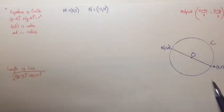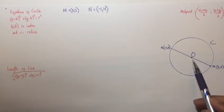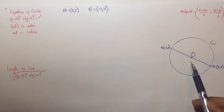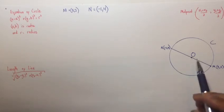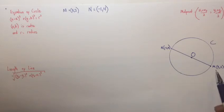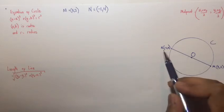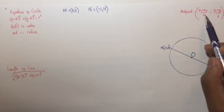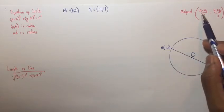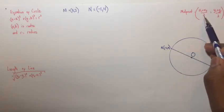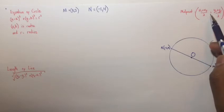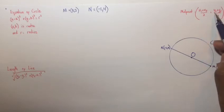Now we know that if the line MN is a diameter, then the midpoint O is actually the center of the circle. So we can find the midpoint of M and N using the equation: (x₁ + x₂)/2, (y₁ + y₂)/2.